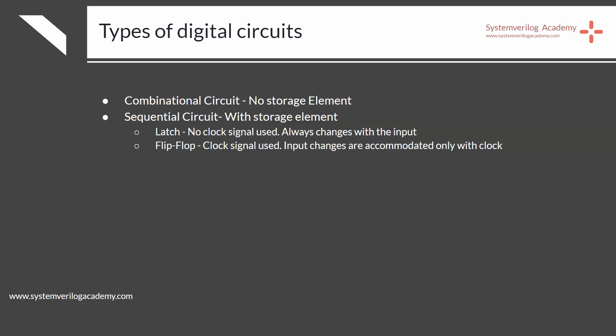All digital circuits are classified into two types: combinational or sequential circuits. Any circuit without a memory storage element in it is called a combinational circuit, and a circuit with memory is called a sequential circuit.